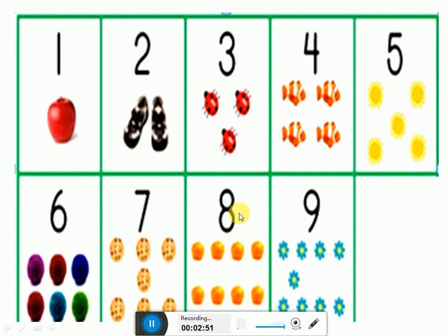7 biscuits. Now look at this. Here is number 8 and here are 8 lemons.